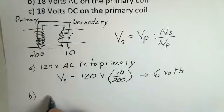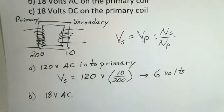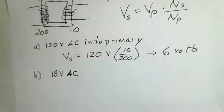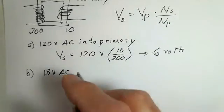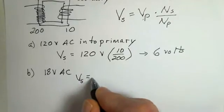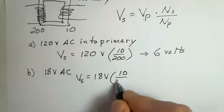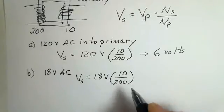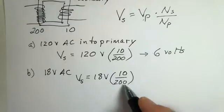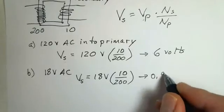So case B, 18 volts alternating current on the primary. Now it's a similar calculation, just the numbers have changed slightly. The voltage across the secondary is going to be now 18 volts times 10 turns on the secondary, 200 turns on the primary. I have to do 18 divided by 20 and that produces 0.9 volts.